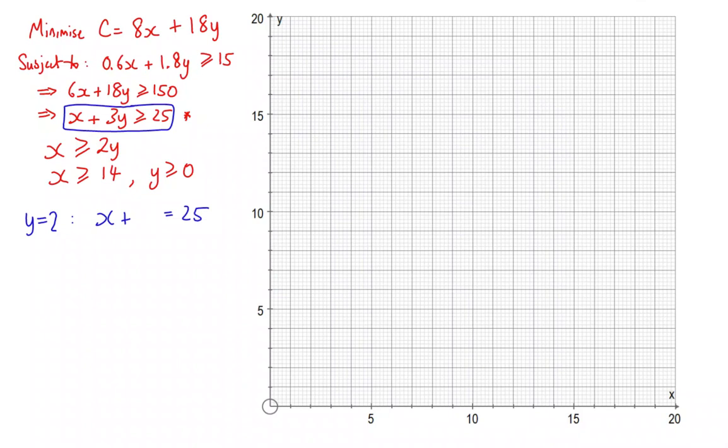When y is 2, we're going to have x plus 6 is equal to 25. That'll be all right because x then would be equal to 19. So 19, 2, that point there. I'm just slightly off on my grid. So 19, 2 is a point there.